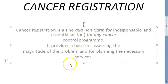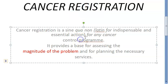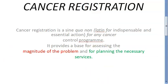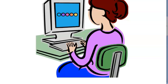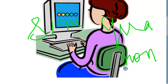Cancer registration provides a base for assessing the magnitude of the problem. Once you register, you will get the magnitude of the problem — how many people have registered, how much cancer is there. And then you will plan for necessary services. So you collect the data, know the magnitude of the problem, and obviously plan for some services.